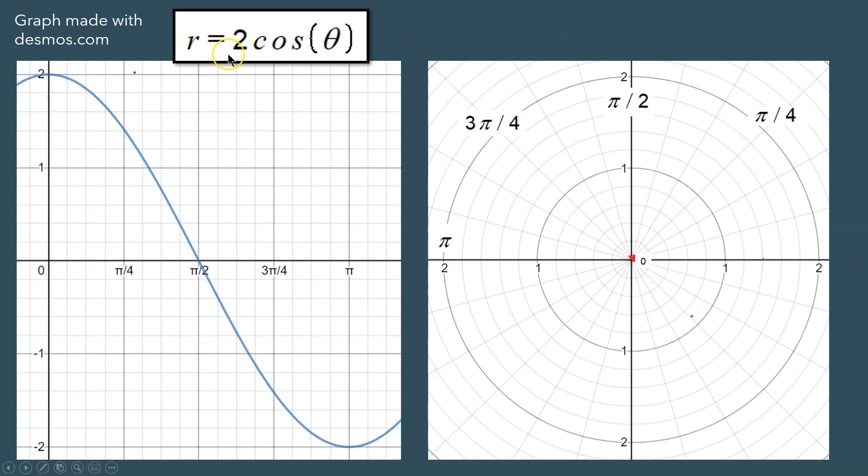Friends, this time I'm going to show you how to make a polar representation of r equals 2 cosine theta. On the left side I have the Cartesian, on the right side I have the polar. And you can make the two work together very nicely.